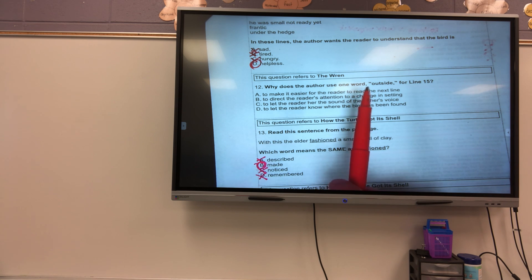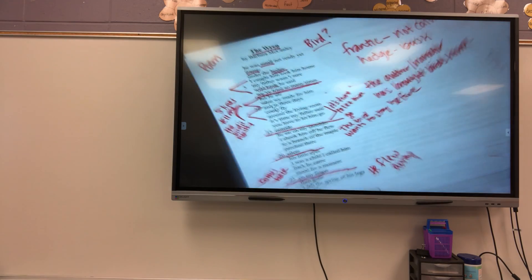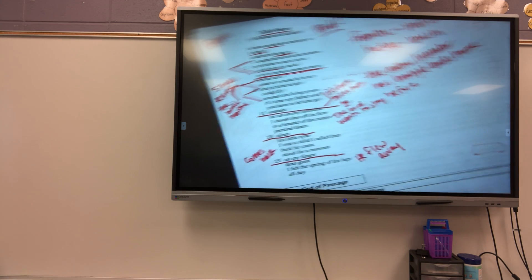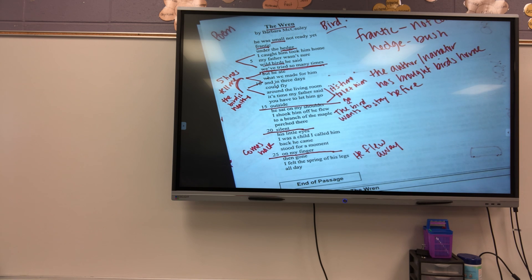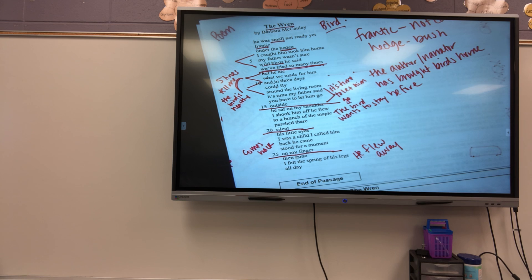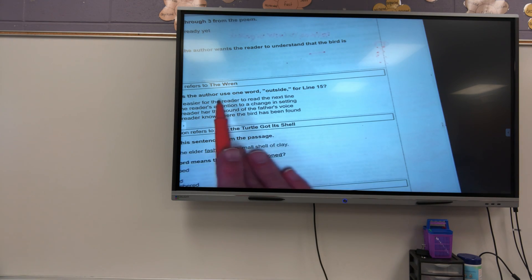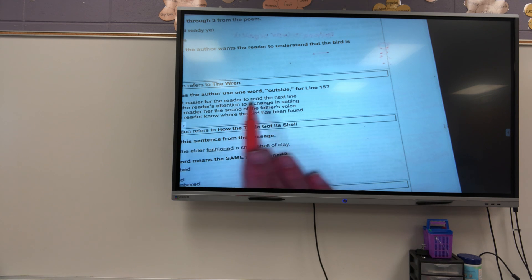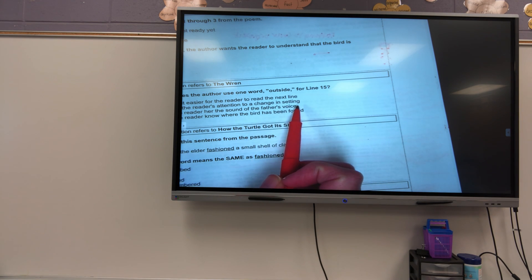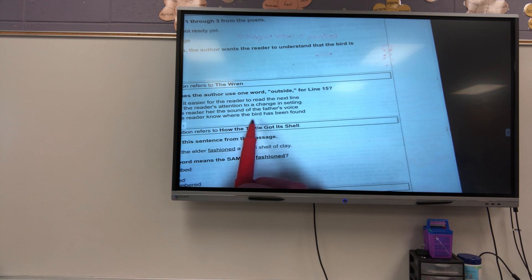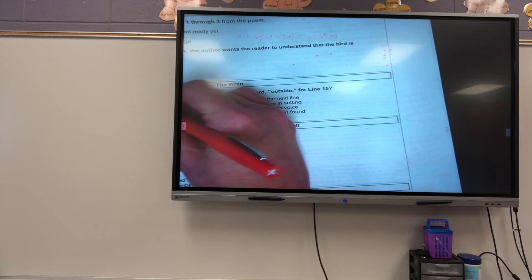And then, why does the author use one word, outside, for line 15? So, let's go back to line 15. It said, it's time, my father said, you have to let him go outside. Well, where had he been flying around? In the house. He had been flying around in the house. Well, she knew that flying around in the house was okay, but once she took him outside, what was a possible thing that could happen? He might fly away from her. So, let's look. Why does the author use one word, outside, for line 15? To make it easier for the reader to read the next one. No. To direct the reader's attention to a change in setting. Maybe. I like that. To let the reader hear the sound of the father's voice. No. To let the reader know where the bird has been found. No. So, my answer is? B.